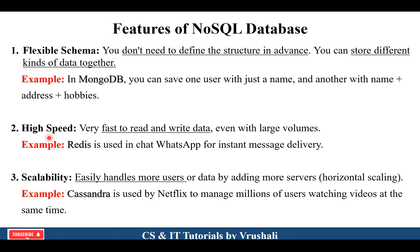The next feature is high speed. Everyone uses WhatsApp — you can send a message to another person very quickly. The chatting application provides results within a second. This is called high speed — they provide very fast read and write of data. Redis database is used in WhatsApp application for instant message delivery.